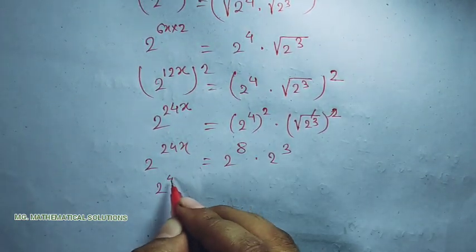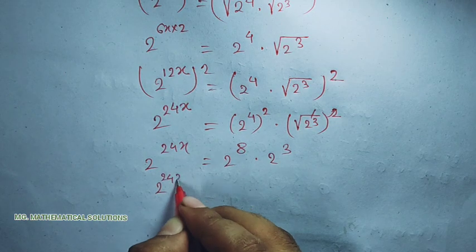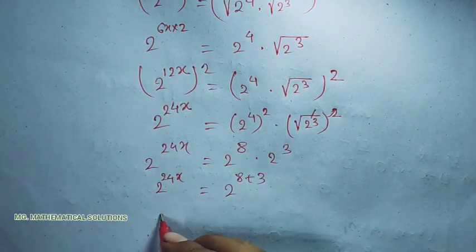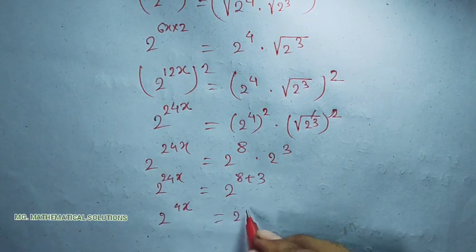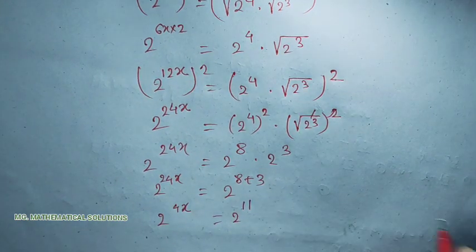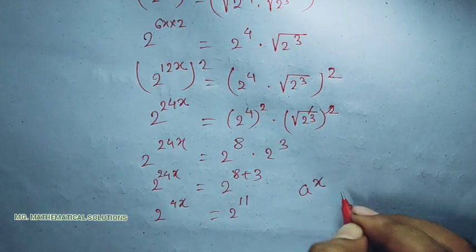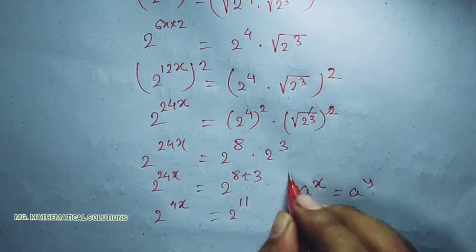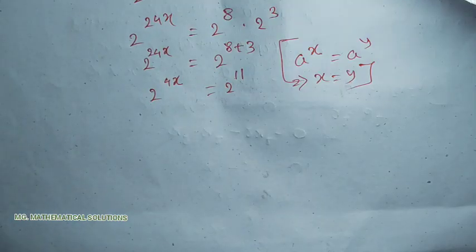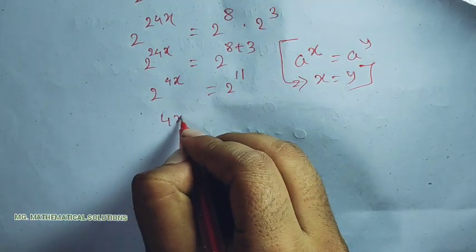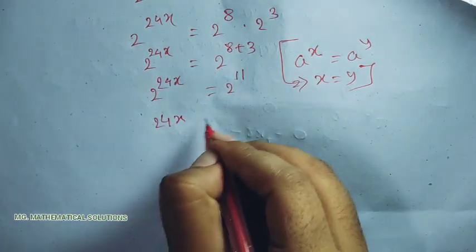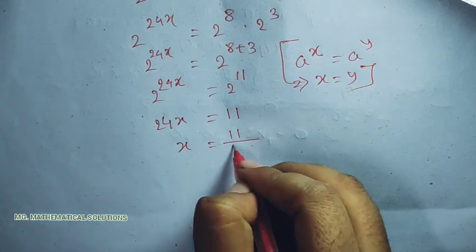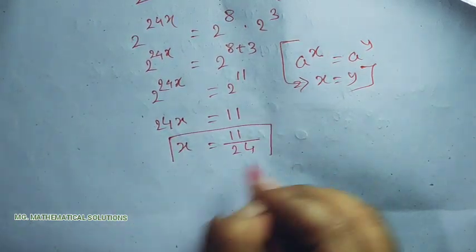So 2 to the power 24x equals 2 to the power 8 plus 3, which is 2 to the power 11. Now using the formula: if a to the power x equals a to the power y, then x equals y. So 24x equals 11, therefore x equals 11 by 24. So this is the final answer.